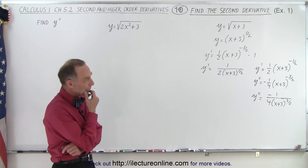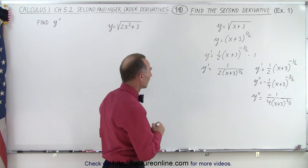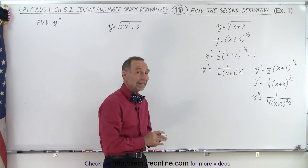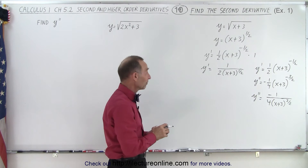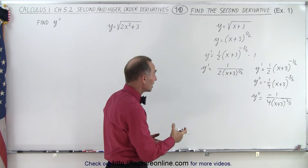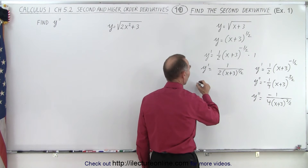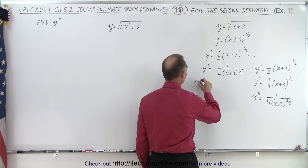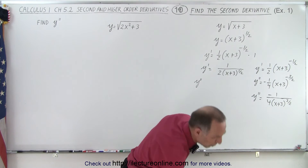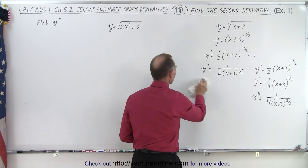That's typically how we write the answer with a positive exponent, and that was the easiest approach. Now let's see if we get the same answer when we take the derivative using the quotient rule technique. So here we have y double prime.